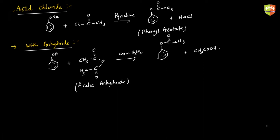In the mechanism: H+ protonates the anhydride oxygen giving it a positive charge. This positive charge causes the bond pair of electrons to leave as CH3COOH, forming an acylium carbocation. The lone pair of the phenol oxygen attacks this carbon as a nucleophile. We get O-C(=O)-CH3 with positive charge on oxygen; then H+ leaves and we get phenyl acetate. This is the method of preparation of esters from phenol using acid chloride or anhydride.